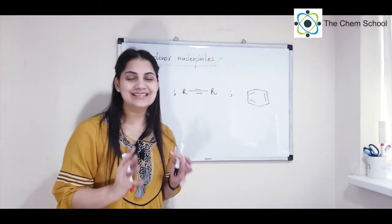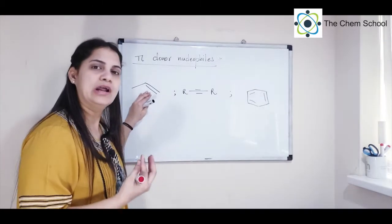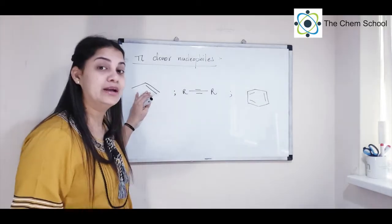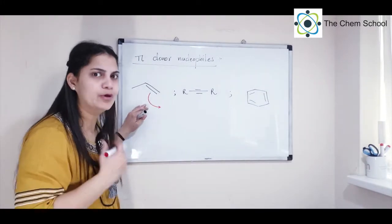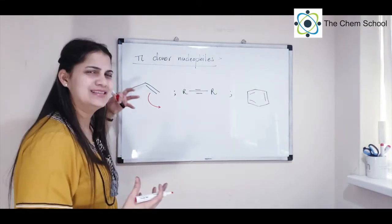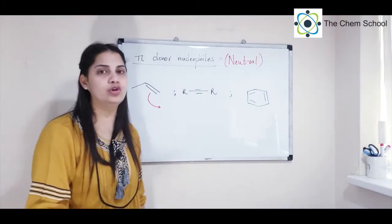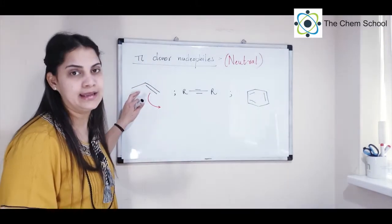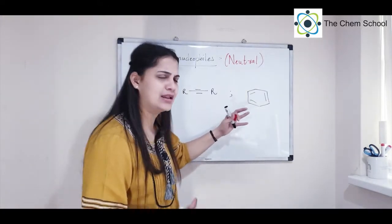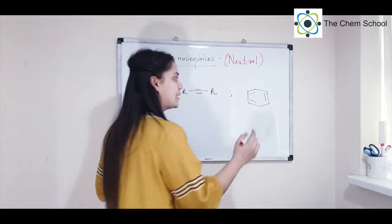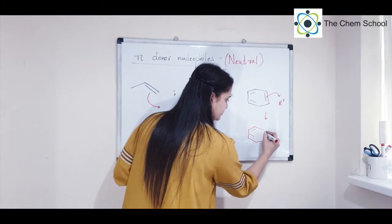The last type of nucleophile is the pi donor nucleophile. The pi bond is loosely held and can be donated wherever needed, making these species electron rich and nucleophilic. Alkenes, alkynes, and aromatic rings all have pi bonds. Pi donors can also be considered neutral nucleophiles, where either a lone pair or a pi bond is donated.